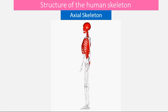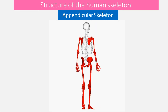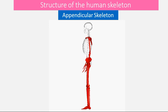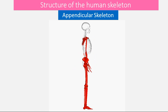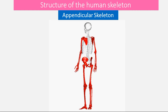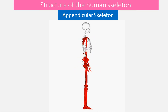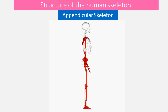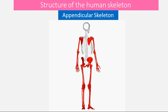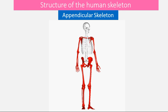The second part of the human skeleton is the appendicular skeleton, which comprises our girdles and our appendages. We have the pectoral girdle from which the upper limbs hang, and the pelvic girdle from which the lower limbs hang.